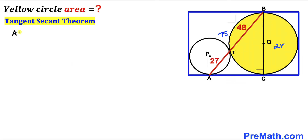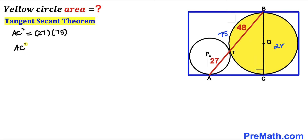So we can write AC² = 27 × 75. Multiplying the right-hand side gives us 2025. So AC² = 2025. Taking the square root of both sides, the AC length turns out to be 45 units.